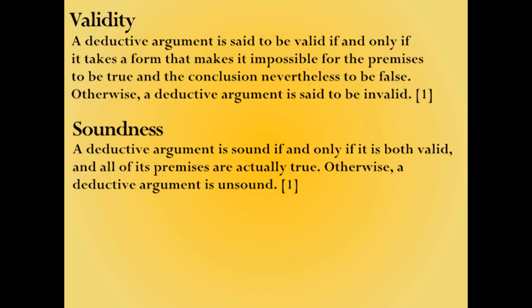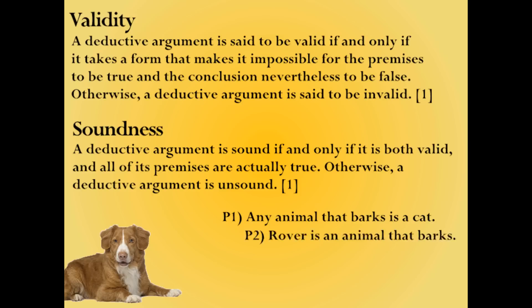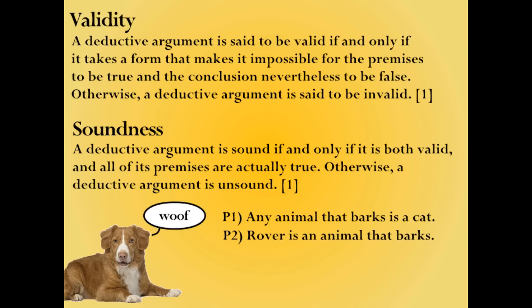To ensure this is clear, let's take a look at a simple example. This is Rover, and he's going to be the basis of our sample argument. I'm going to present this argument in what's called a logical syllogism, in which I will individually present each of my premises and then the conclusion. Premise one: any animal that barks is a cat. Premise two: Rover is an animal that barks. Conclusion: therefore, Rover is a cat.